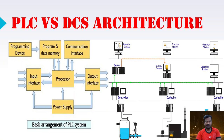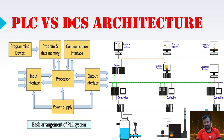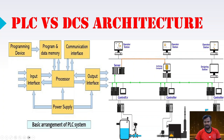When it comes to DCS, it has many components involved. It has field devices similar to PLC, but the number of field devices is very large due to the nature and size of the plant being controlled. The number of analog sensors is much higher. The DCS has input/output modules and controllers.